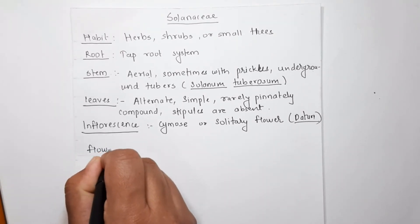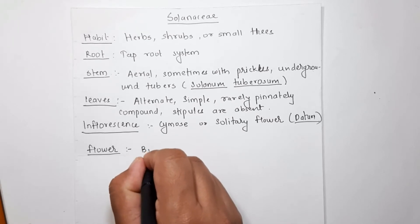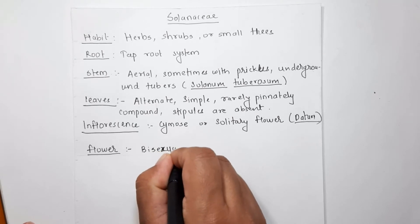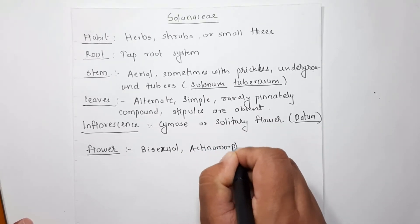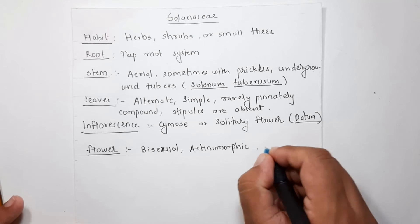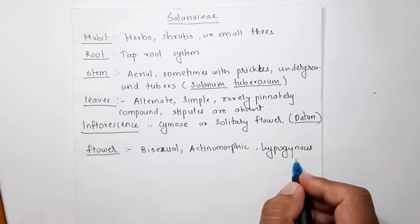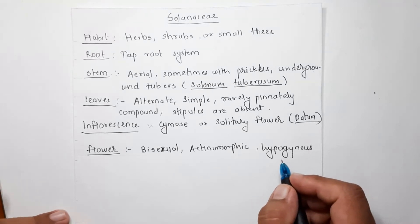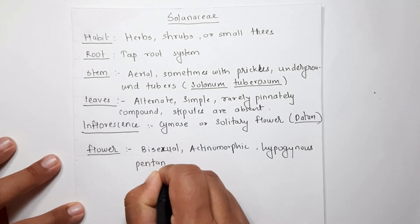The flower in the Solanaceae family is a complete flower, meaning it consists of all essential and non-essential floral whorls. It is bisexual, that is hermaphrodite, and actinomorphic — the symmetry is actinomorphic, meaning the flowers can be divided into two equal halves. The flower is hypogynous with a superior ovary, and pentamerous — meaning each floral whorl is present in multiples of five.